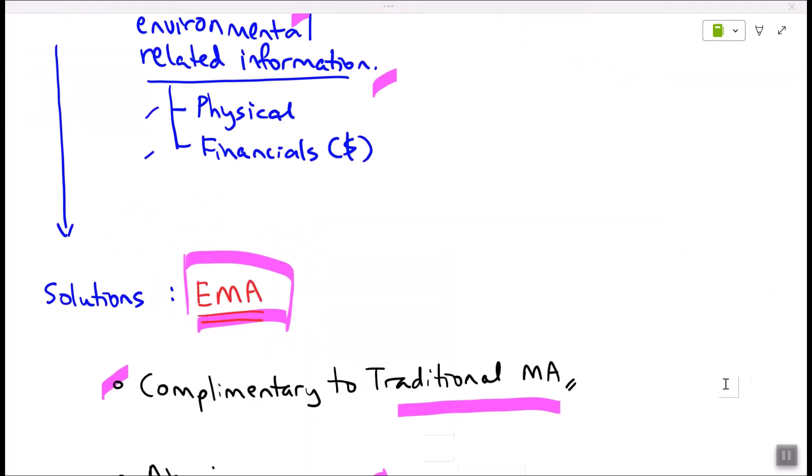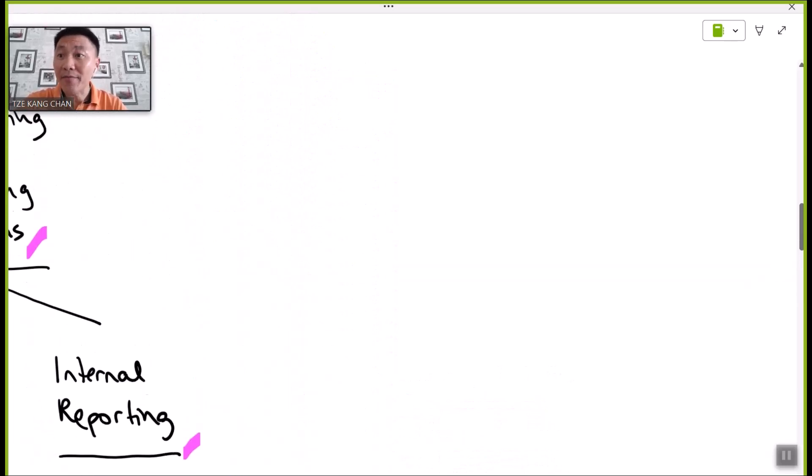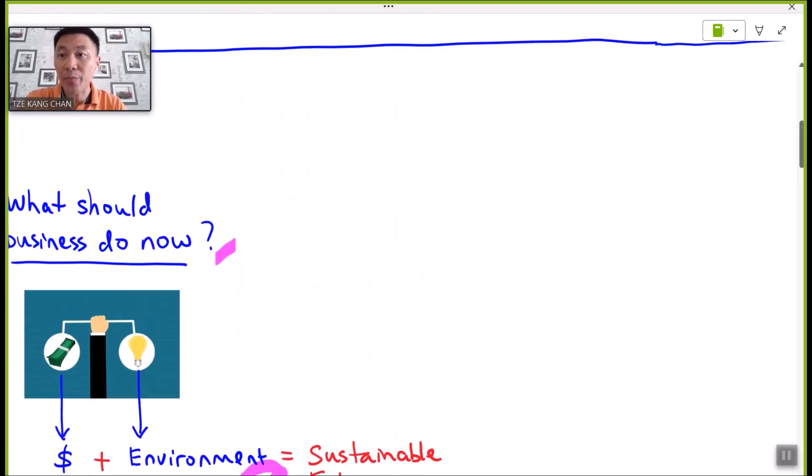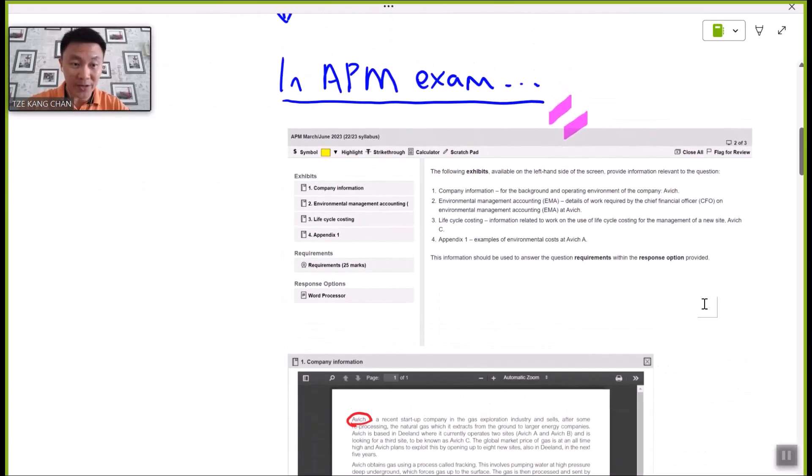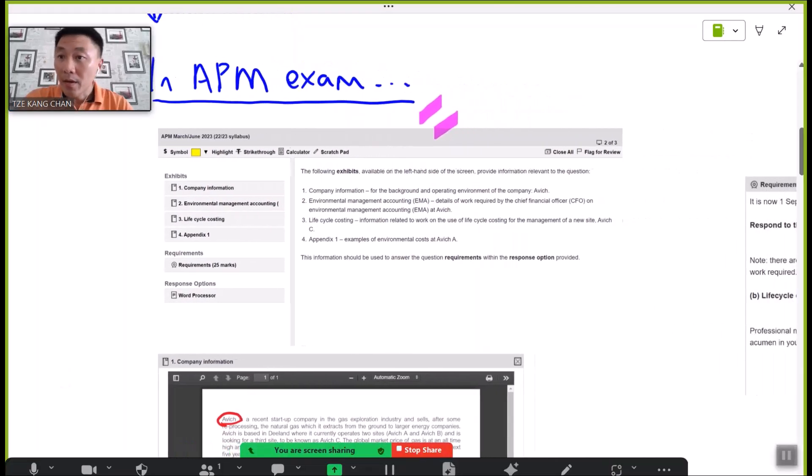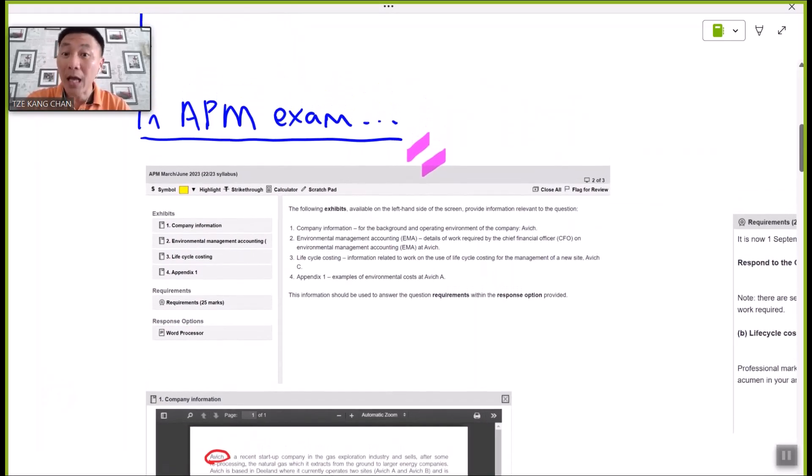So guys, that's all for the introduction of EMA. Now it's time to take a look at how environmental management accounting systems appear in the APM examination. Here is one of the following examination questions. Before listening to the following part of the video, you are highly encouraged to glance through the following question on your own and come up with an answer plan and try to match up with what I'm going to tell you in a short while.